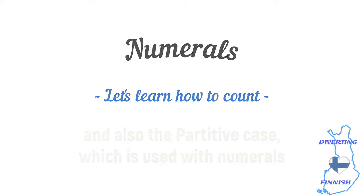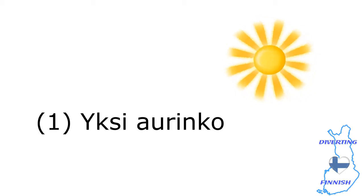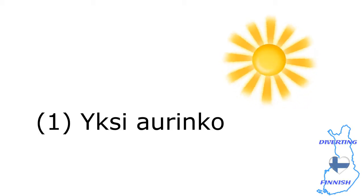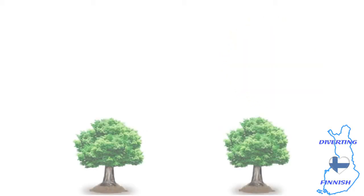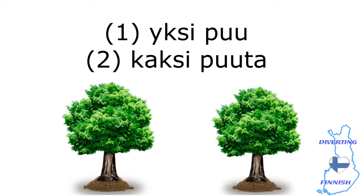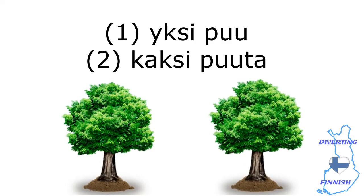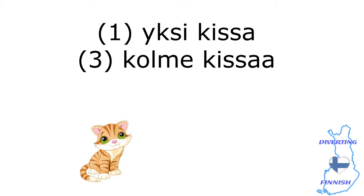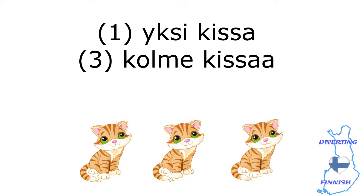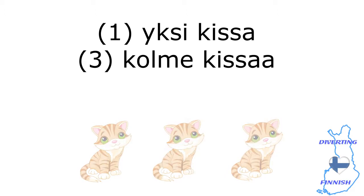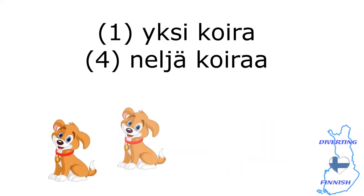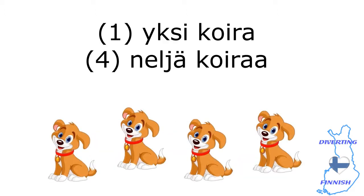Listen and repeat. 1 aurinko. 1 puu, 2 puuta. 1 kissa, 3 kissaa. 1 koira, 4 koiraa.